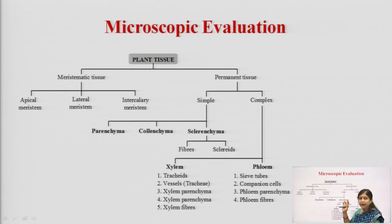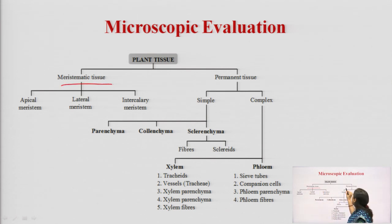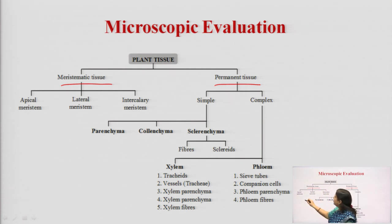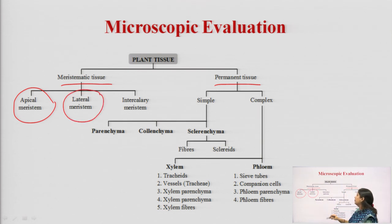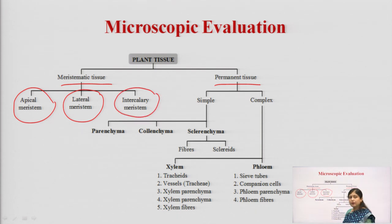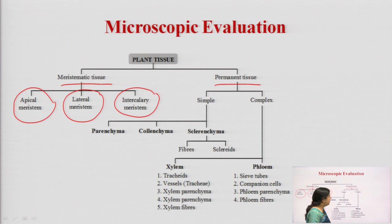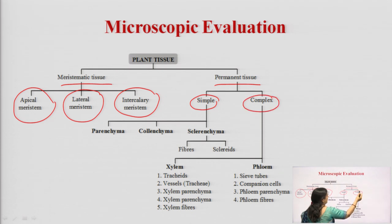Now, if we look briefly at the different types of cellular constituents: plant tissue can be differentiated as meristematic tissue or permanent tissue. Meristematic tissues are those which are generally able to differentiate into different types of cells — they can be apical meristem, lateral meristem, or intercalary meristem. They differentiate into new cells, while permanent tissues are already differentiated and are either the simple type or the complex type.